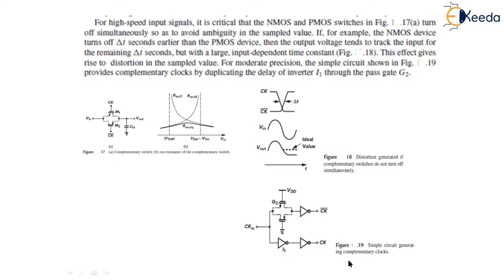For moderate precision, the simple circuit shown in figure 19 provides complementary clocks by duplicating the delay of inverter I1 through the pass gate G1.